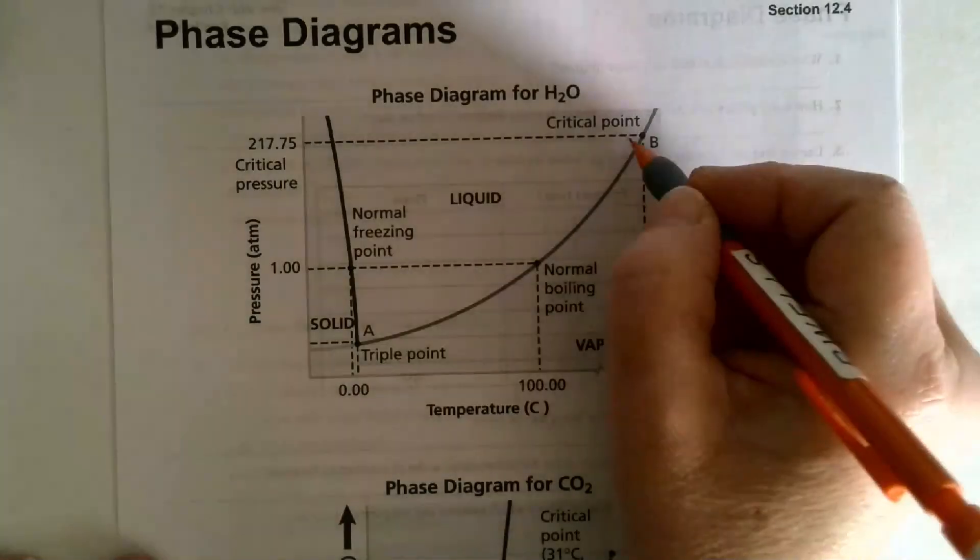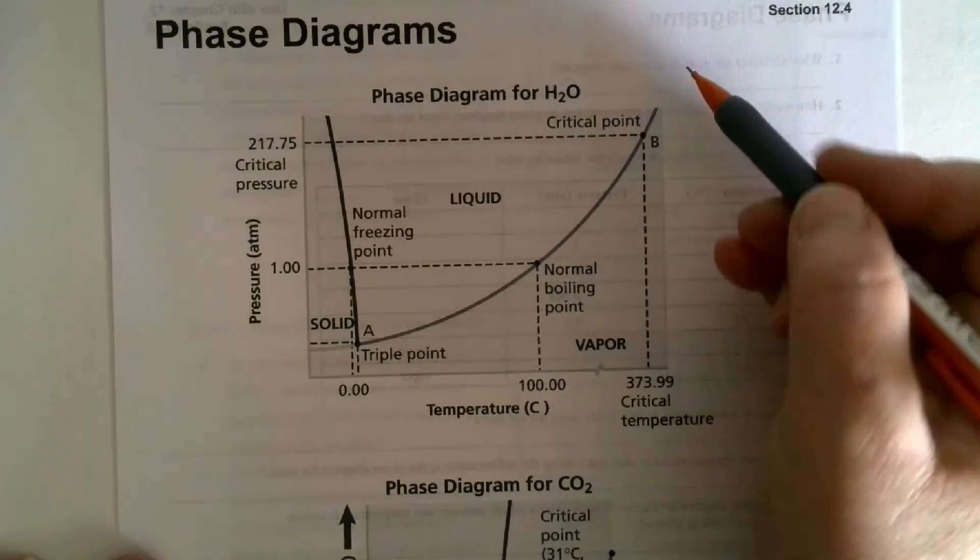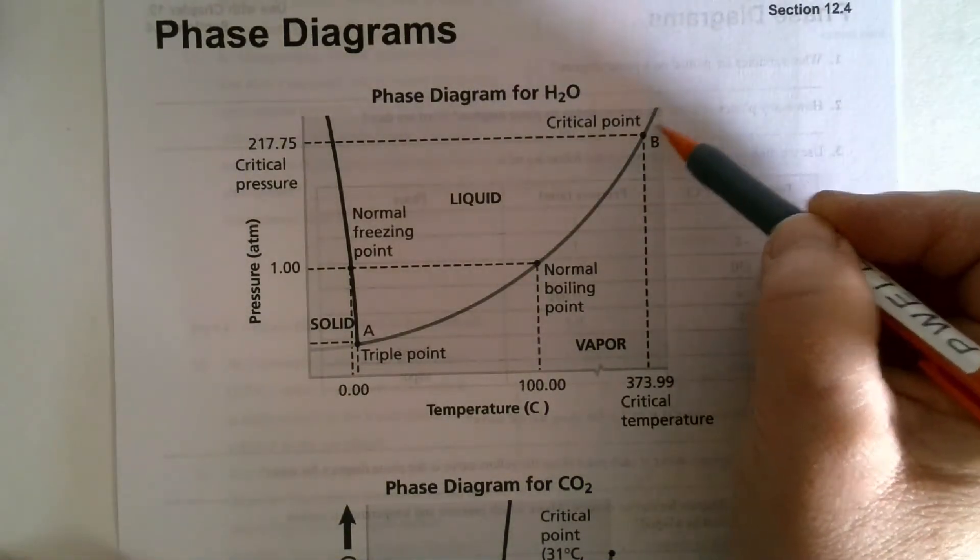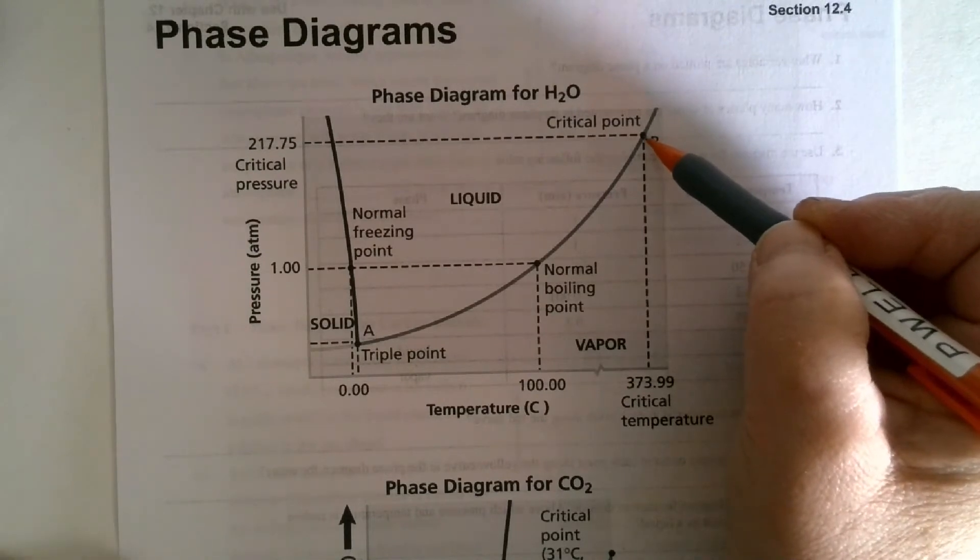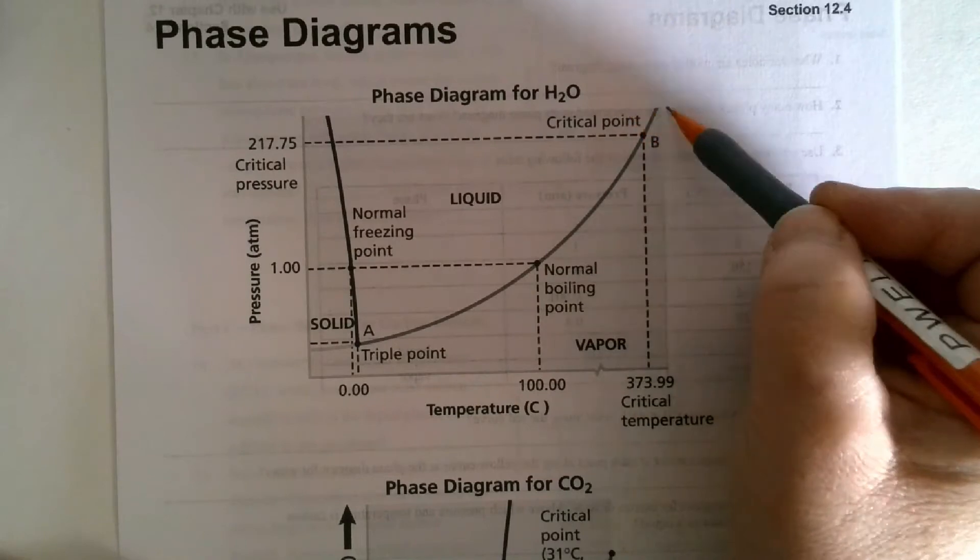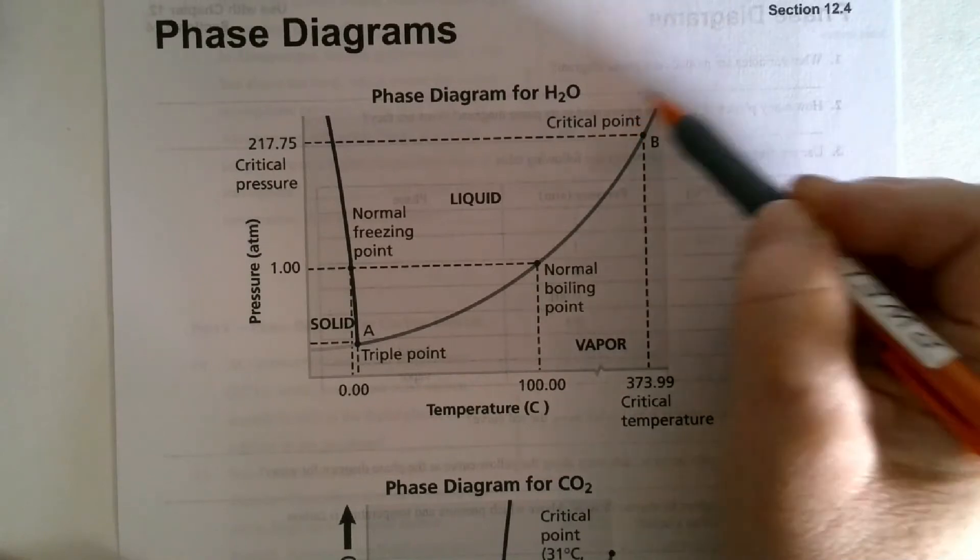At point B, it is a critical point. This diagram is not quite correct. This little piece right here should not be on there. But this critical point, after this critical point, there's no differentiation between a liquid and a vapor. There is no way to differentiate them.